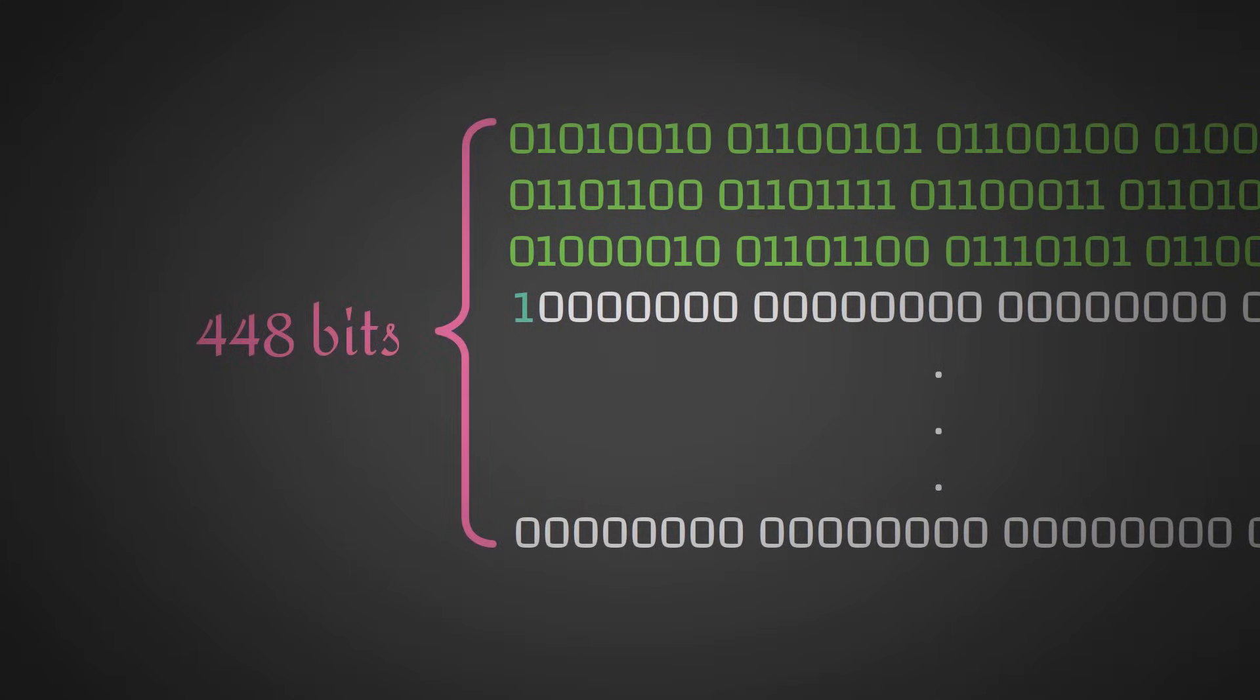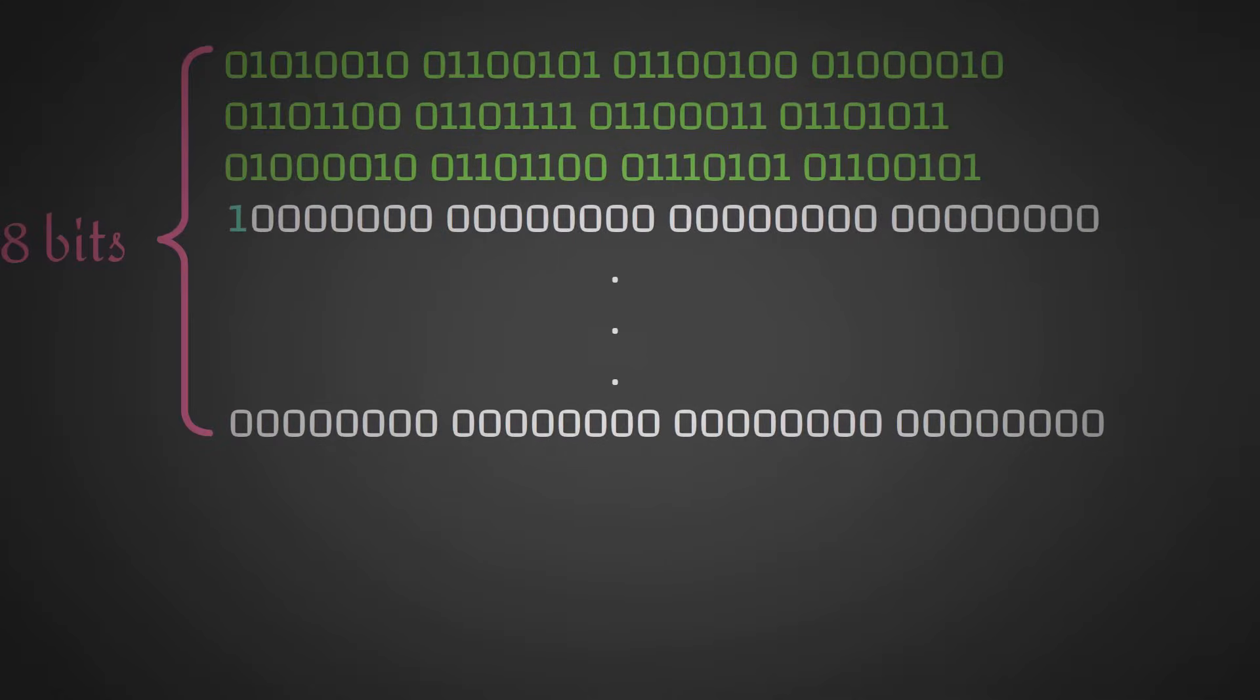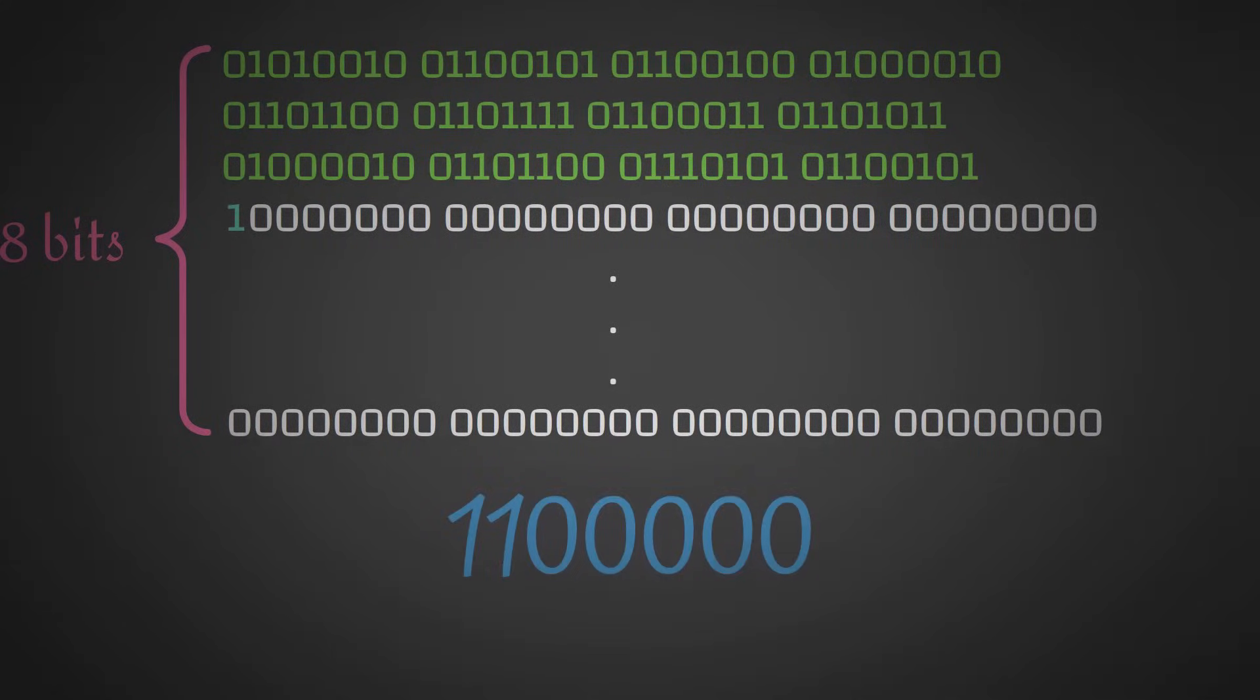Now the remaining 64 bits are used to represent the original length of the input, which was 96. 96 written as a binary number is 110000.